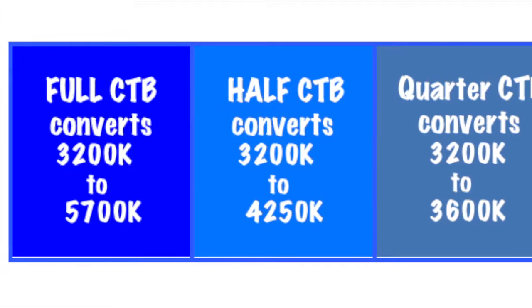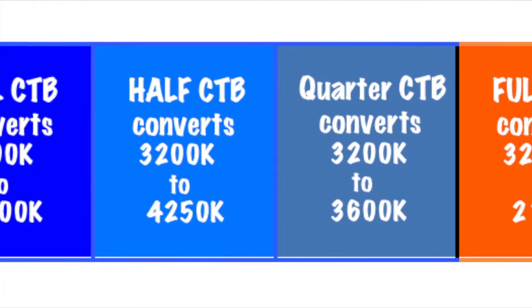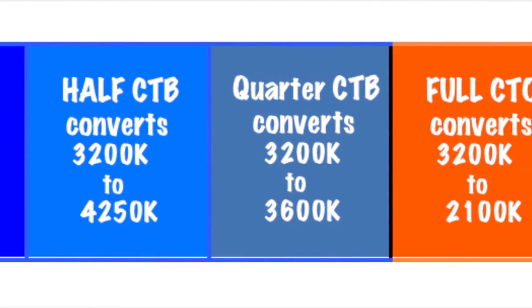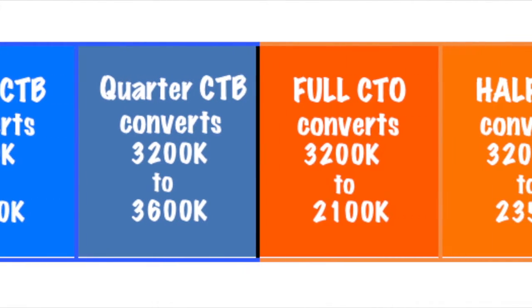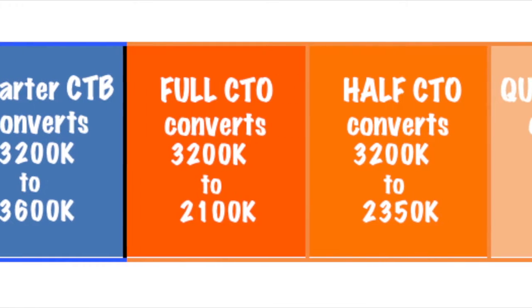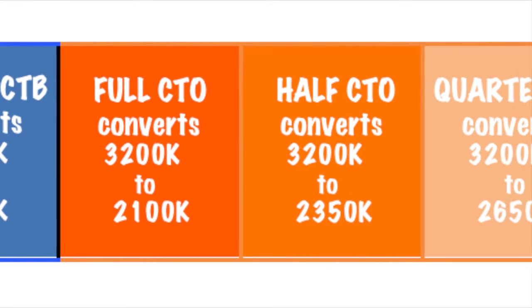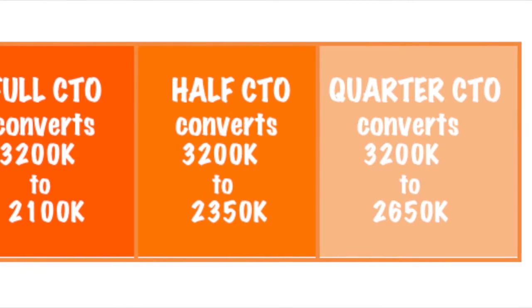You can also use color correction gel on tungsten light in varying degrees. It is common to use color temperature blue, or CTB for short, to make tungsten light cooler. Or color temperature orange, or CTO for short, to make tungsten light warmer.